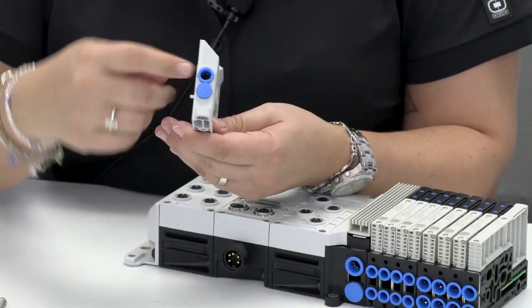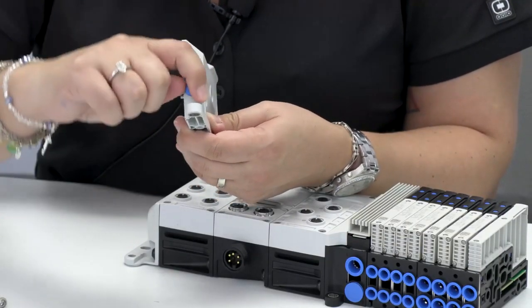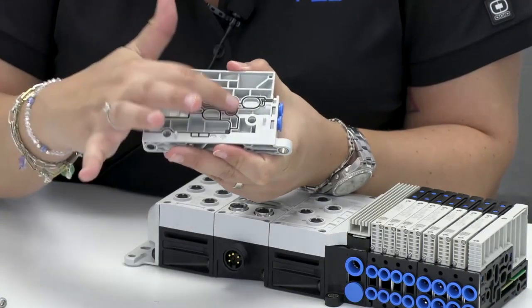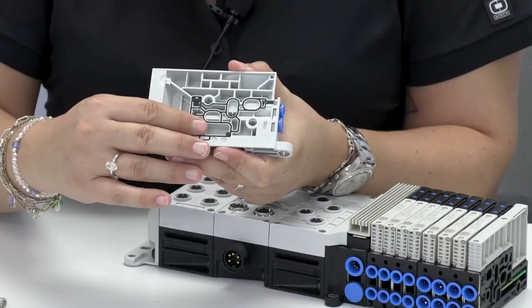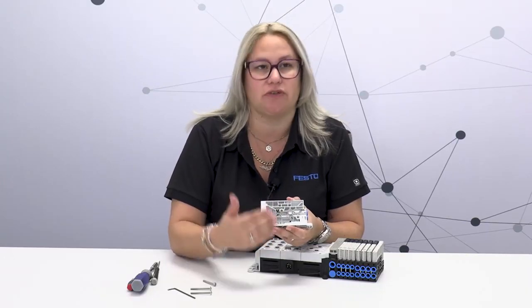In this case, what we're going to have to do is for the end plate we would have to remove this plug and change it for a fitting. Then in here we will put a plug right here that will allow you to then change your pilot from internally piloted to externally piloted.